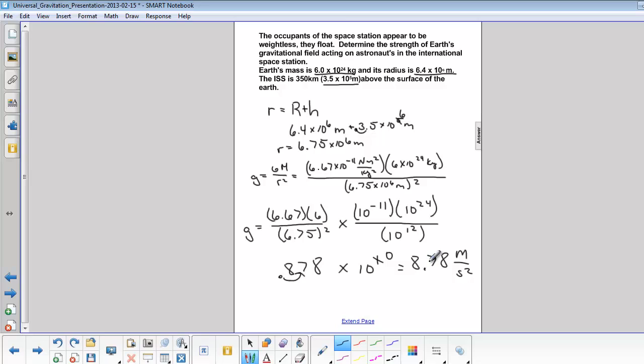So 8.78 meters per second squared. And on Earth, on the surface of Earth, it is 9.8 meters per second squared. Not much of a difference. But these astronauts float. They look like they're weightless. Yet the acceleration due to gravity on the space station is almost the same as what it is here on Earth. So why do you think that is?